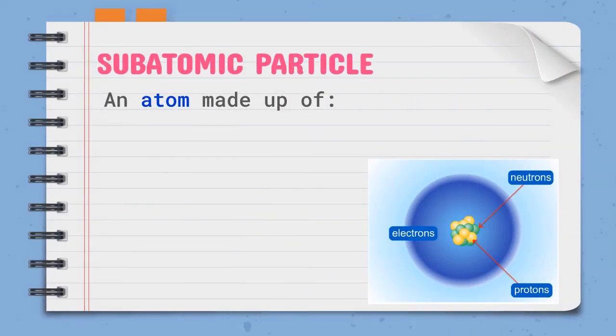As suggested by the name of the subtopic itself, the main highlight is going to be atoms and molecules. Atoms are the basic building blocks of all matter. Atoms are so small that we cannot see them. An atom is made up of three parts: proton, neutron, and electrons.